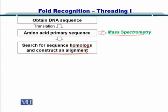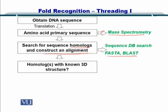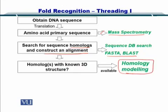Now, what if homology is low between the sequence that you are trying to find the structure for and the sequences in the database? That is the question we are going to address in this module. You go and get sequences from the database and perform a BLAST. If you had homologs with 3D structure known, then you did homology modeling. If structures were not known or not available, then you would not be able to do this.